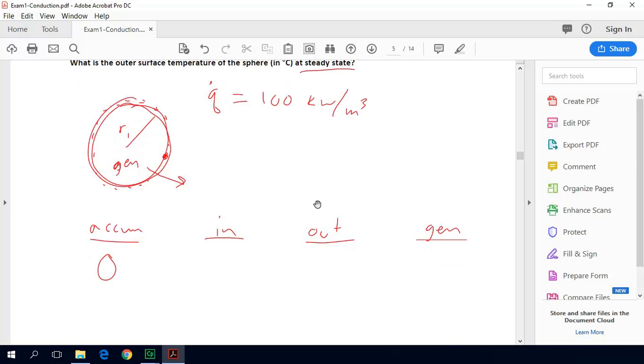What's coming into this sphere we can assume is nothing. We will assume that because there is heat generation in the sphere that all that energy will be going out. Our out term is going to happen by Newton's law of cooling. So that's H times the outer surface area of the sphere times that surface temperature, we'll call that Ts minus T∞. And then we have this volumetric generation term. So our generation is going to be Q̇ times V.